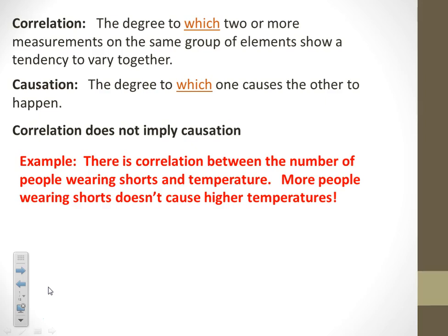More people wearing shorts does not cause the temperature to rise. If we turn that around, we could make it a causation relationship: the higher the temperature is outside, probably the more people are going to wear shorts. But it's not the other way. So there's a correlation, but there's not causation unless we get the order correct.